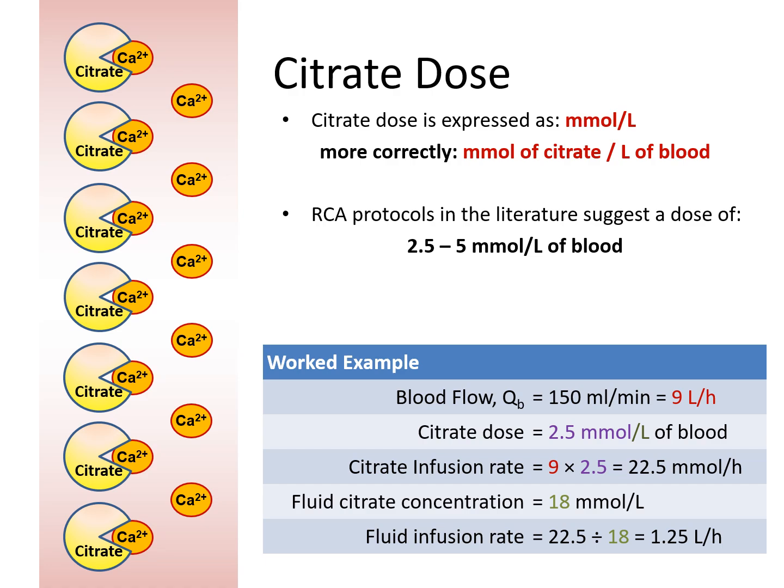RCA protocols in the literature suggest that the dose of citrate should be about 2.5 to 5 millimoles of citrate per liter of blood. This is how the calculation will work out. Let's say if we use a blood flow rate of 150 mls per minute, which is 9 liters per hour, and target a citrate dose of 2.5 millimoles per liter of blood.